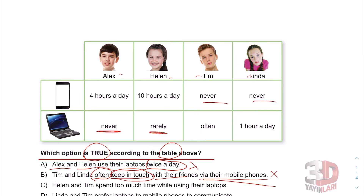C: Helen and Tim spend too much time — çok fazla vakit geçiriyorlar — while using their laptops. Laptoplarını da çok fazla geçiriyorlar. Let's see — Helen and Tim: rarely and often, nadiren and sık sık. So they do not spend too much time on their phones.